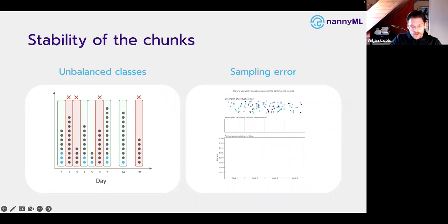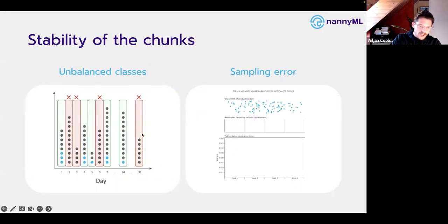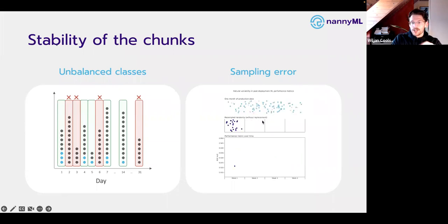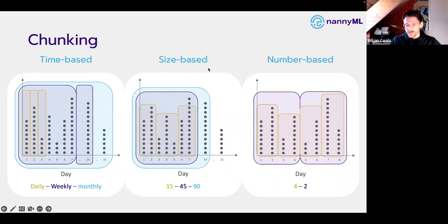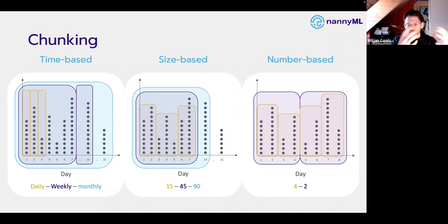That's why we have the standard error baked into our open source library. When picking the right chunking method: consider that smaller chunks are less stable and more susceptible to sampling error. Ideally, pick something that makes sense from a business perspective. If you're evaluating churn models monthly, aggregate all predictions over the entire month. If you have an API making daily predictions for fraud detection, you might want to look at it at a daily or even five-minute interval.